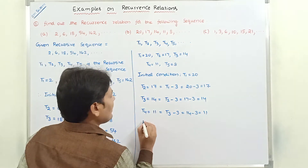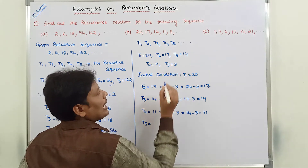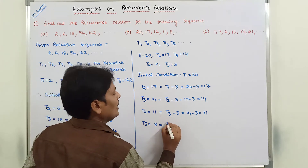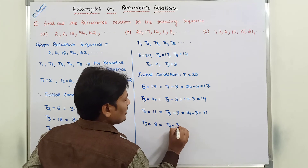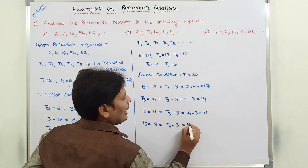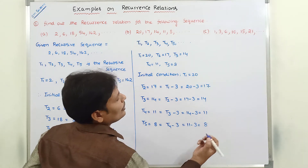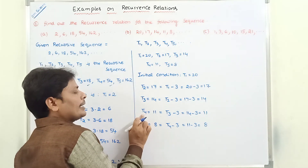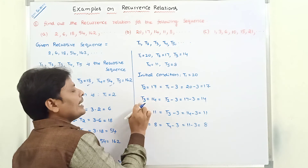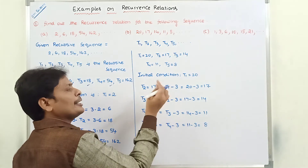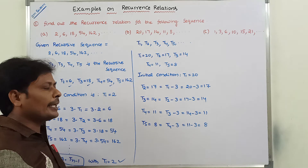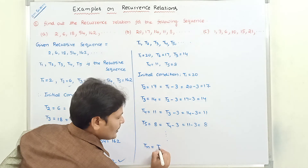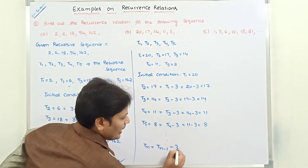T5 = 8 can be defined in terms of T4 as T4 − 3 = 11 − 3 = 8. In the same way, Tn can be defined in terms of T(n-1) − 3.